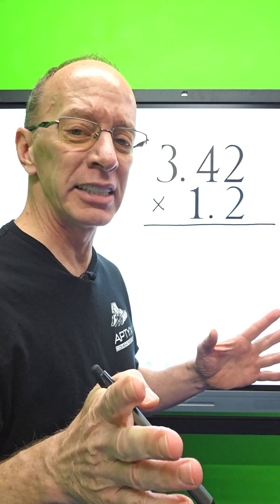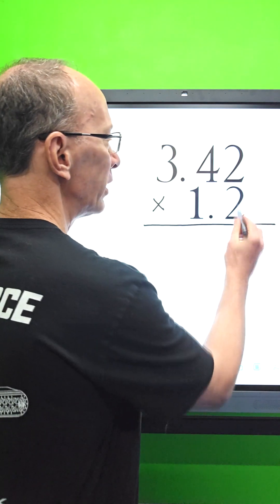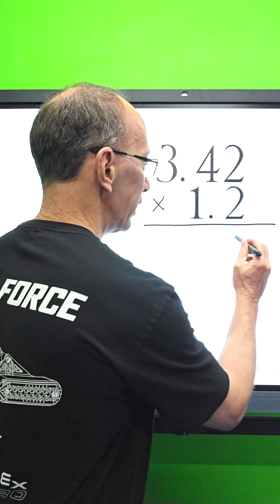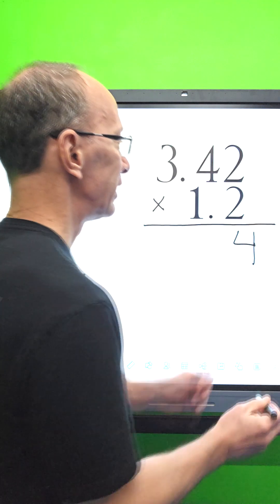All right, so first of all, two times two is four, so I go ahead and put the four right there. Then I take two times four is eight, hey don't be late, so I'm gonna put the eight right here.